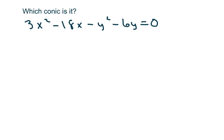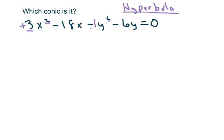Hi everyone, we're going to determine which conic this is. Basically, since we have both squares and the coefficients in front are different, it means it's a hyperbola or ellipse. This one's a hyperbola because one term is positive and one is negative. This video is intended for after you've already studied hyperbolas — it's basically a review on how to complete the square and find information about hyperbolas.